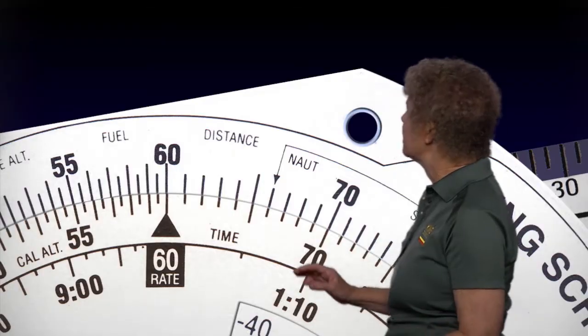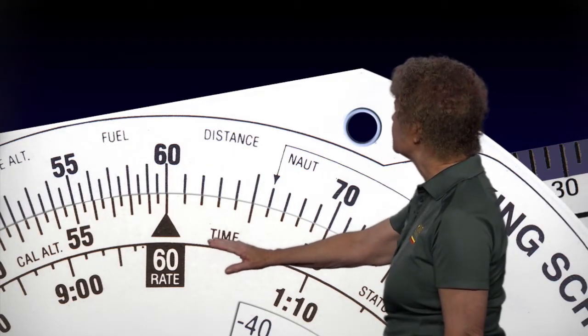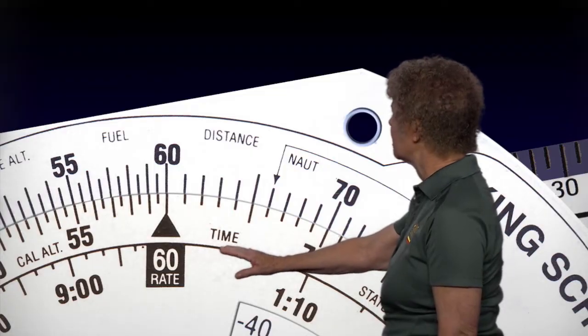The 60 on the inside scale is going to be your time. 60 is the minutes. And if you look a little bit to the right on that inner dial, notice that the inner scale is labeled time. That's minutes.